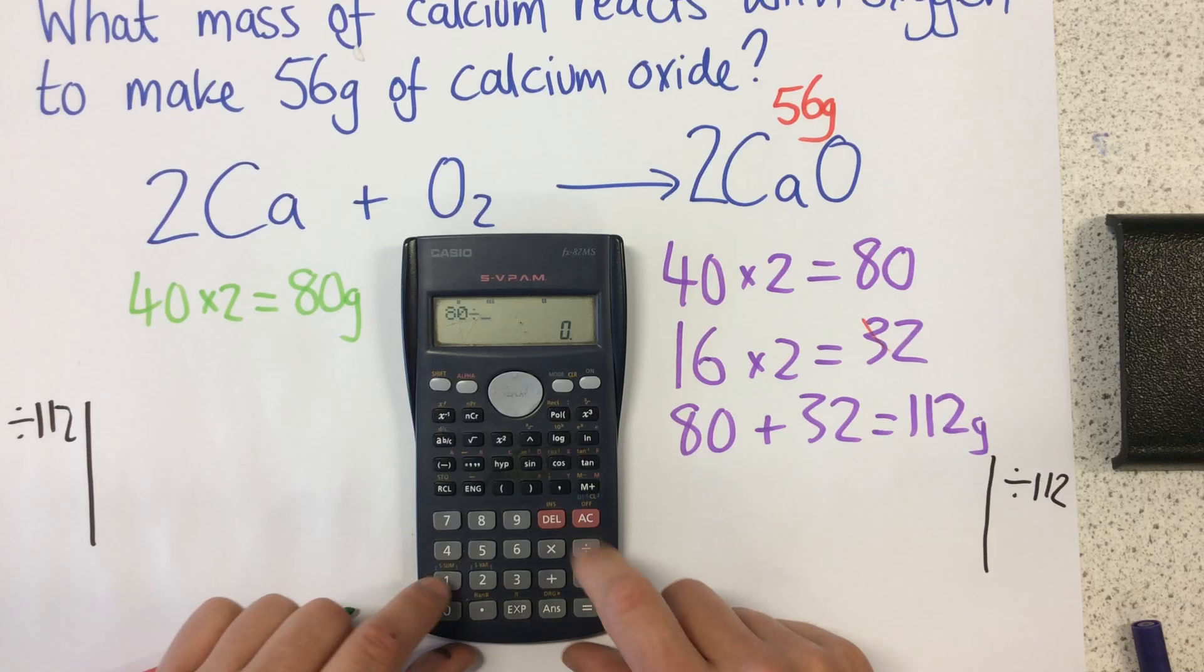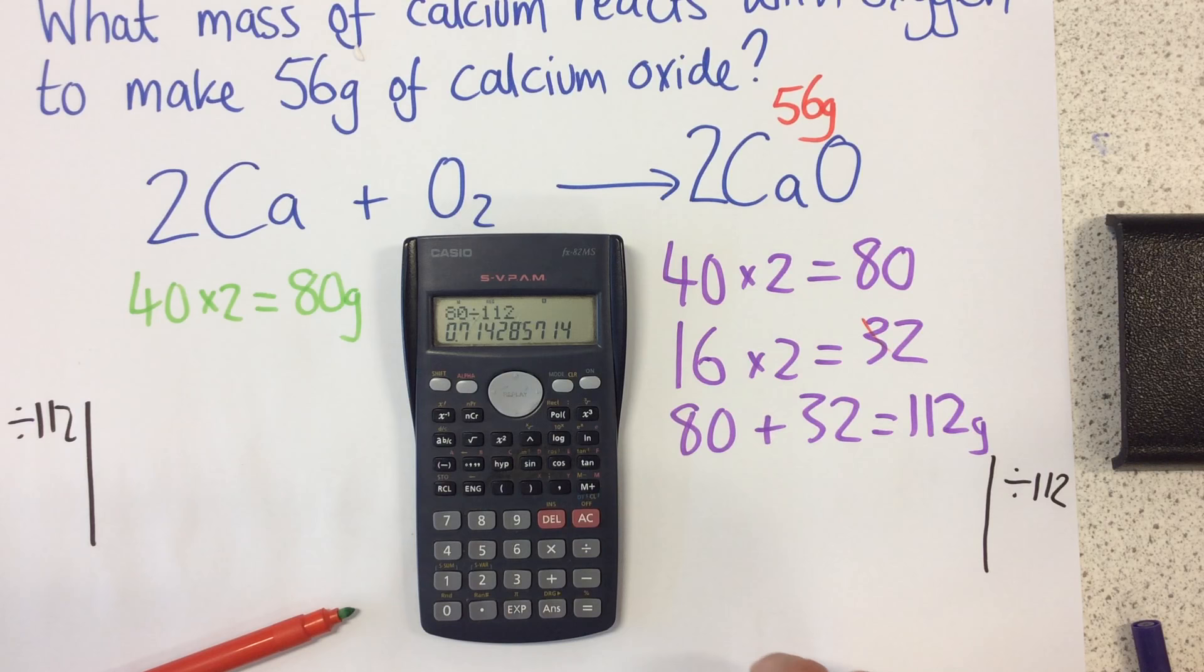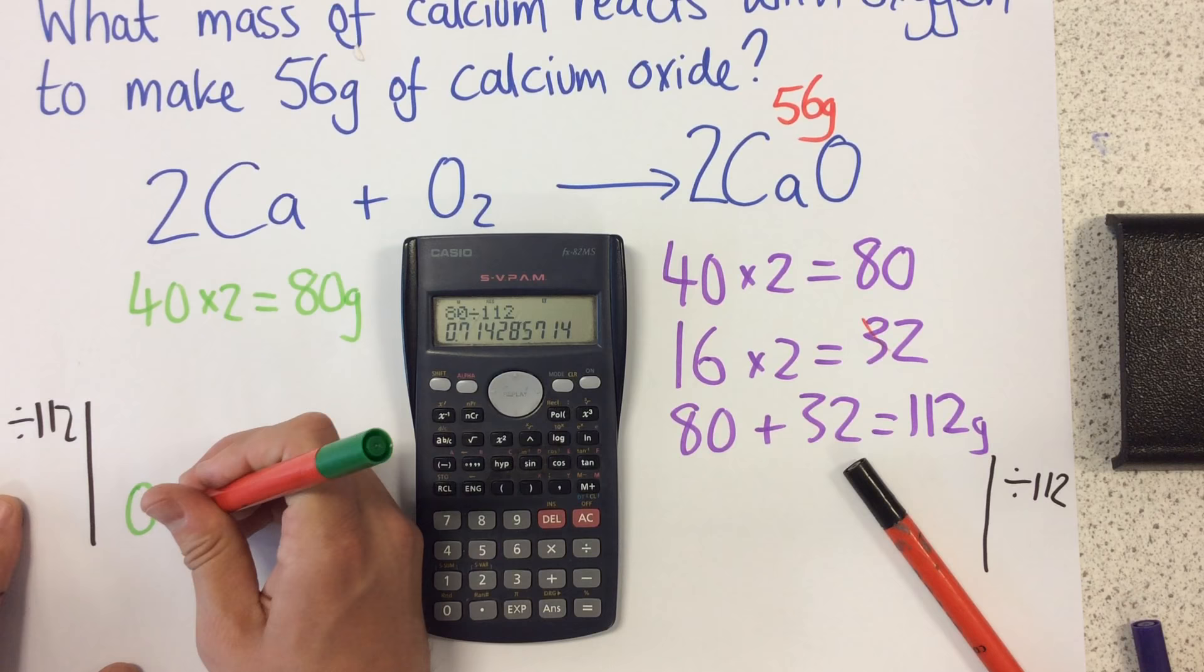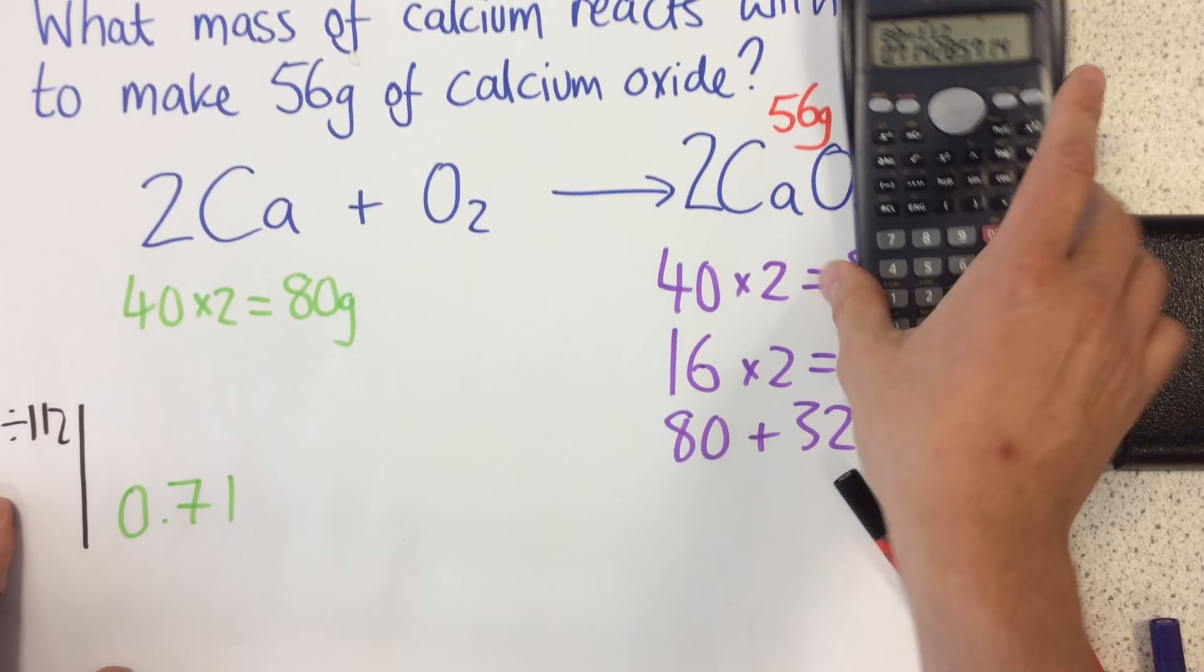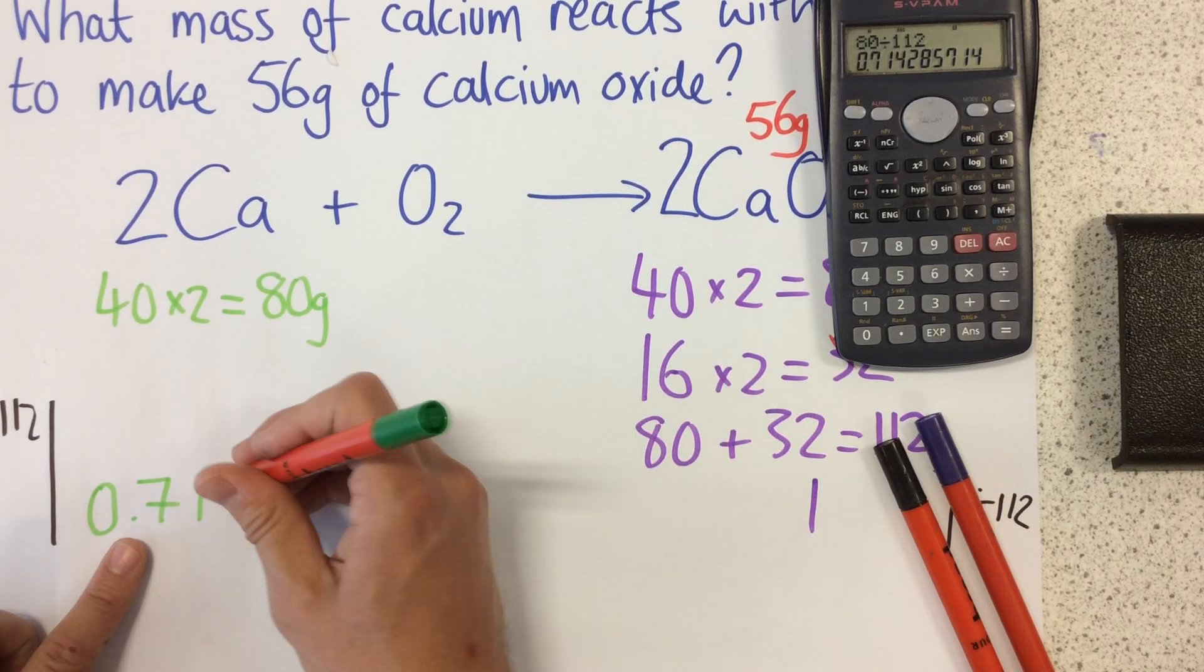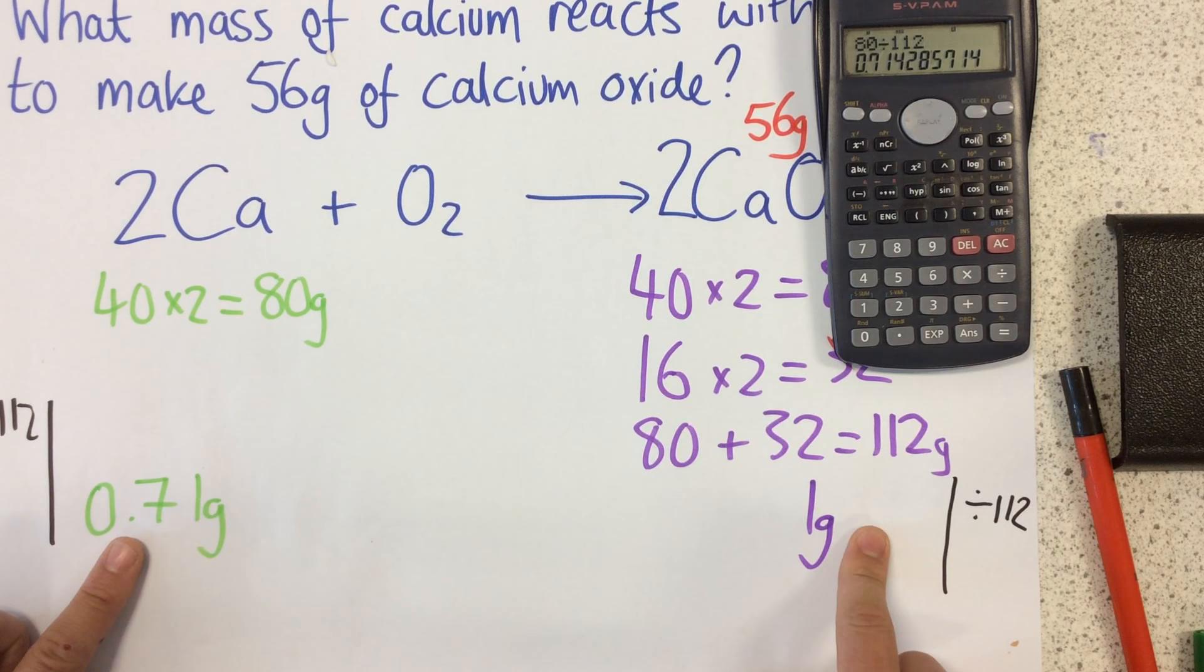Oh, it's given me quite a nasty number. I'm not going to worry about that right now. So I'm just going to show it at the moment to two decimal places, 0.71. So what I'm now saying is 0.71 grams of this gives me 1 gram of this.